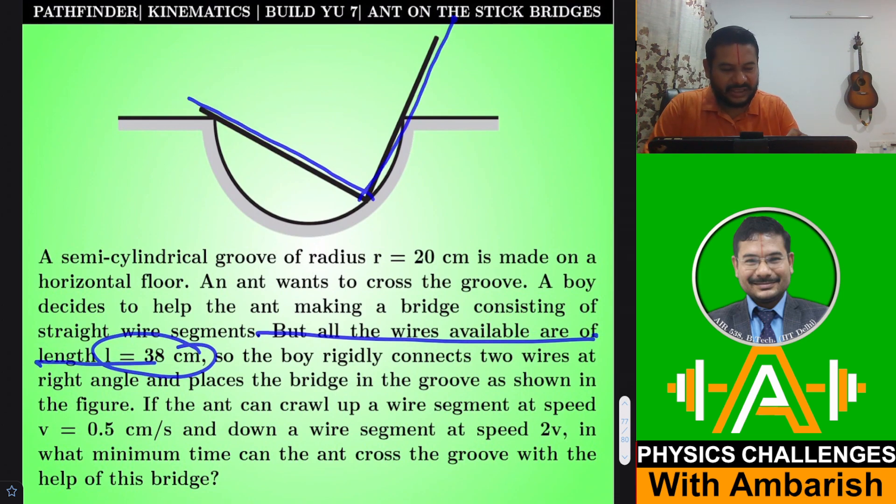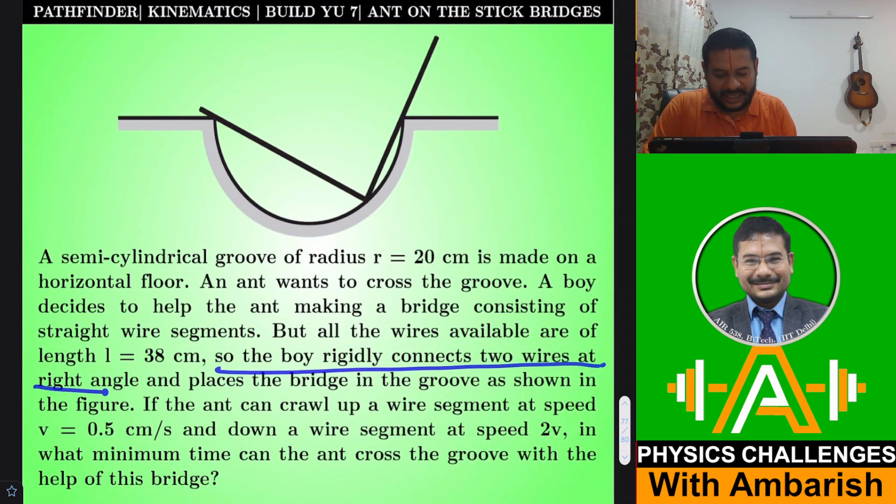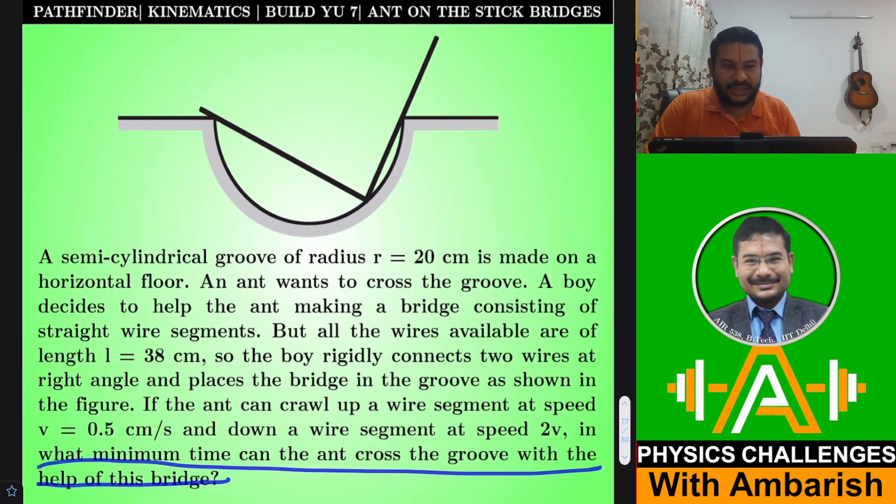These sticks are 38 cm long each. The boy rigidly connects two wires at right angle and places the bridge in the groove as shown in the figure. They're connected at 90 degree angle and the boy has placed it like this. If the ant can crawl up a wire segment at speed V = 0.5 cm/s and down the wire segment at 2V, that is 1 cm/s, in what minimum time can the ant cross the groove with the help of the bridge?